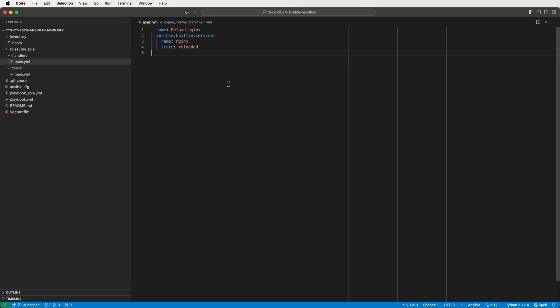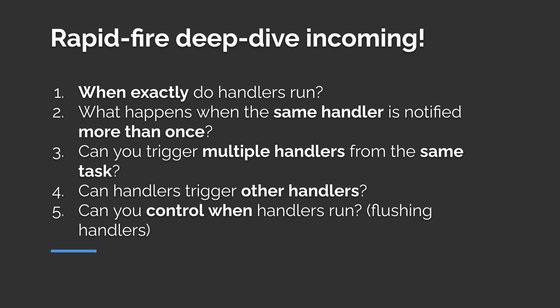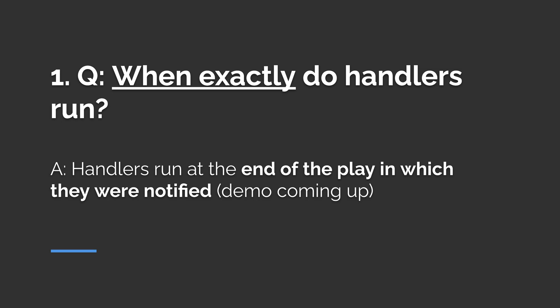Those two examples cover the basics, but if you're writing production Ansible, knowing the answers to some common questions about handlers is going to save you a lot of headaches and time. First question: when exactly do handlers run? In our examples it looks like the handler runs immediately after the config task, but actually handlers run at the end of the play in which they were notified.